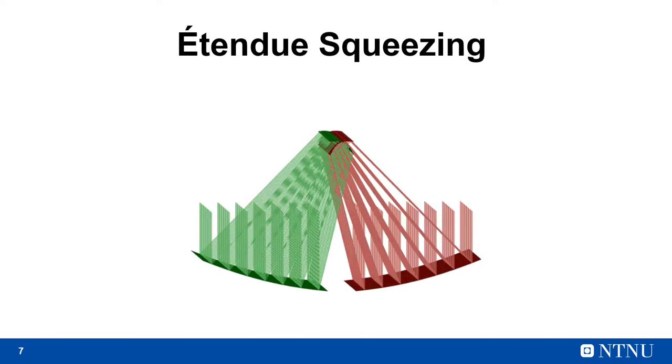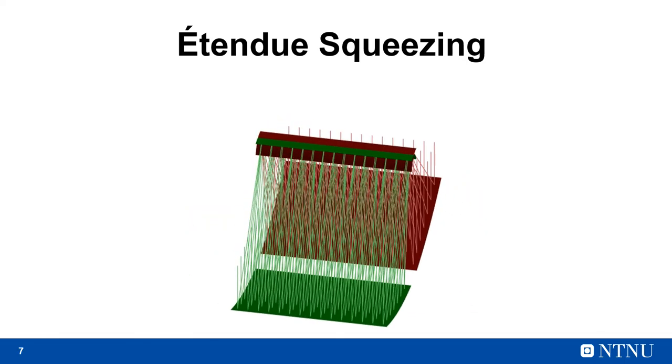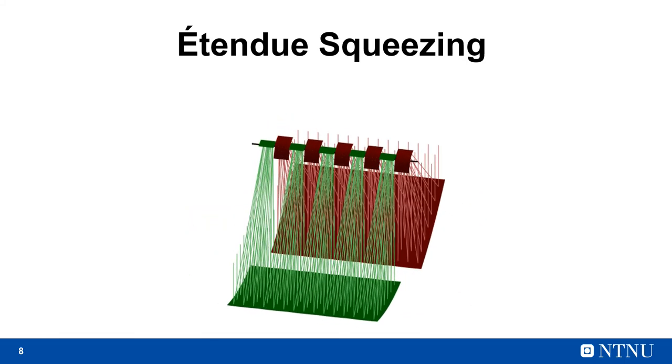But we have a third dimension at our disposal, so we can add some concentration about the other axis. And now each primary only needs half the length of the secondary. So light from the green part of the primary only reaches the green part of the secondary, and light from the red part of the primary only reaches the red part of the secondary. In three dimensions, we have actually doubled the concentration onto this receiver. And this is the basic concept that we are working on.